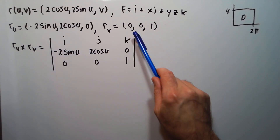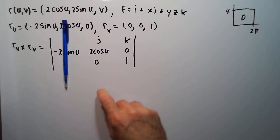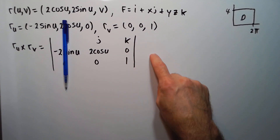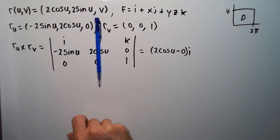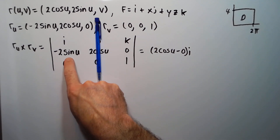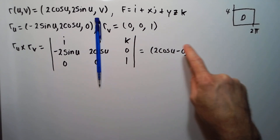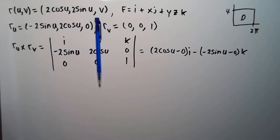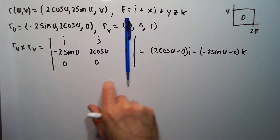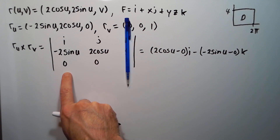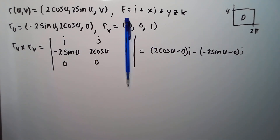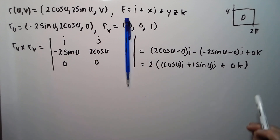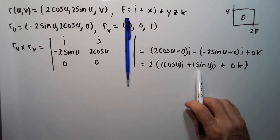For the cross product r_u × r_v: the i component is cosine u times 1 minus 0 times 0, giving 2 cosine u. The j component has a minus sign: minus (−2 sine u times 1 minus 0 times 0), giving 2 sine u. The k component works out to 0. So factoring out a 2, r_u × r_v equals 2(cosine u i + sine u j + 0 k).